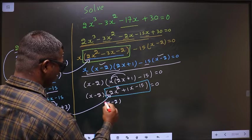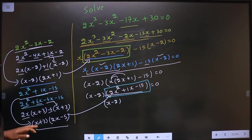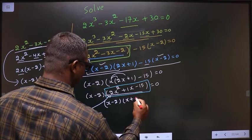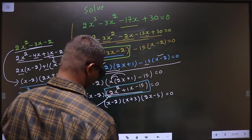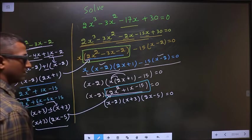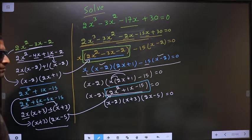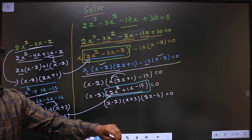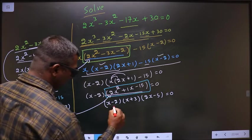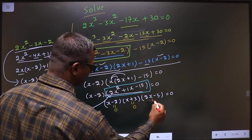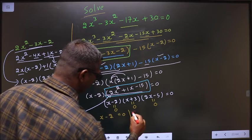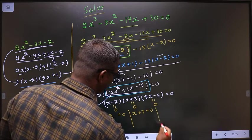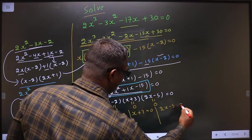This is x minus 2. In place of this quadratic, this one: x plus 3 and 2x minus 5. They told you to solve, so you need to find the values for x. Here the product of the brackets equals 0, so equate each bracket to 0. That is x minus 2 equal to 0, or x plus 3 equal to 0, or 2x minus 5 equal to 0.